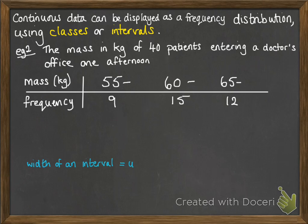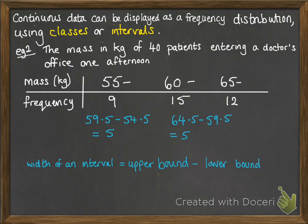We also talk about widths of intervals. That's the upper bound minus the lower bound. For these ones, this interval runs from fifty-nine point five to fifty-four point five, or sixty-four point five to fifty-nine point five. Each of those is a width of five.